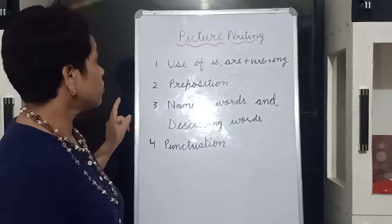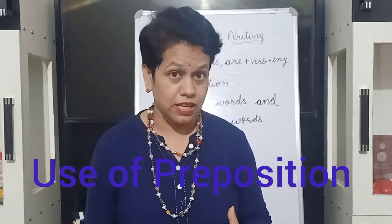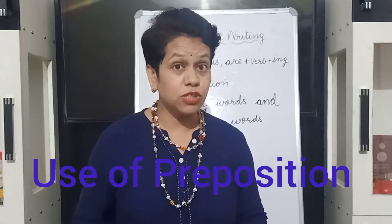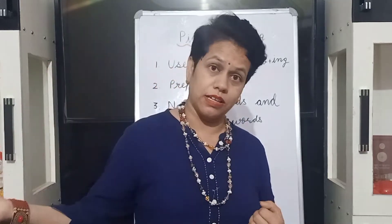Rule number two is use of prepositions. It means you have to use preposition words. Preposition words are: in, on, under, in between, in front of, near, far. These are preposition words, and you have to use as many as you can.